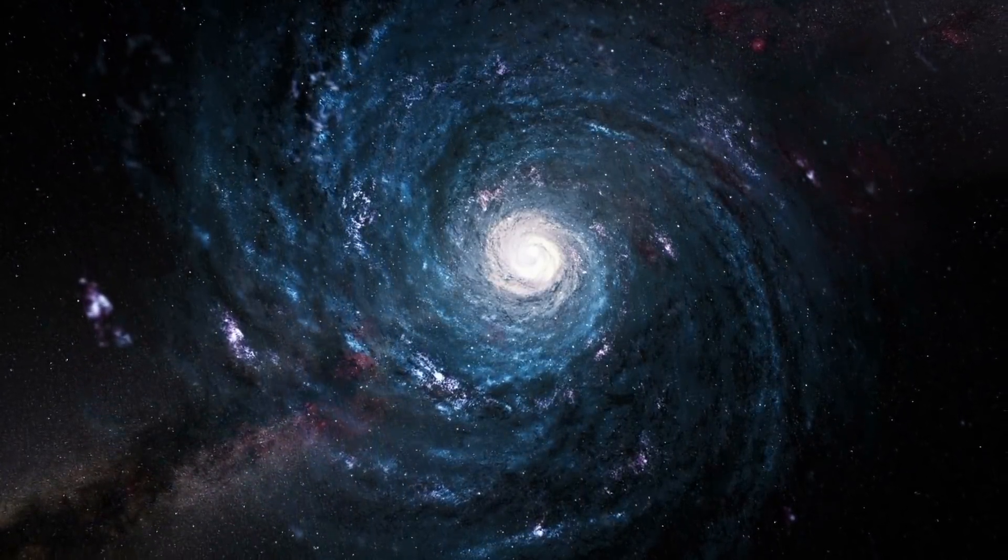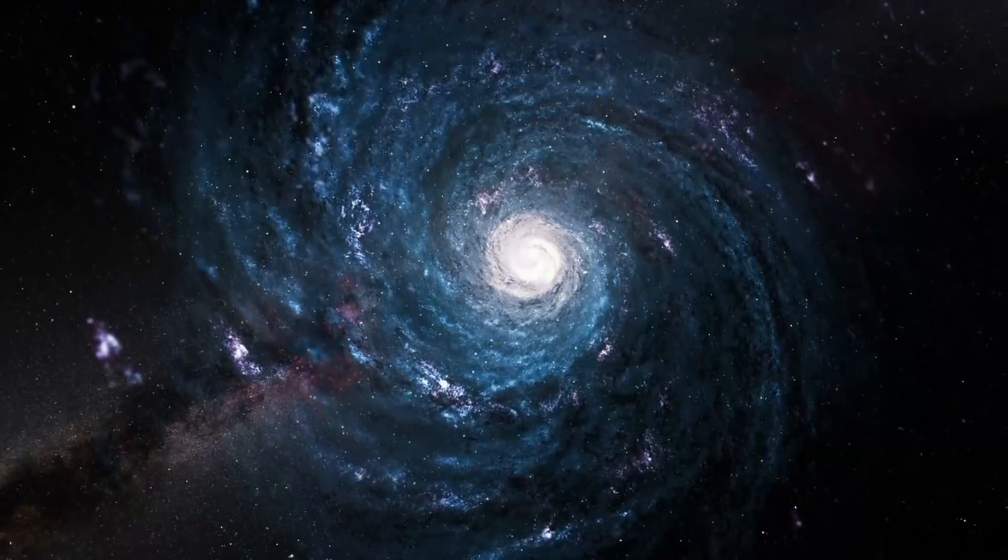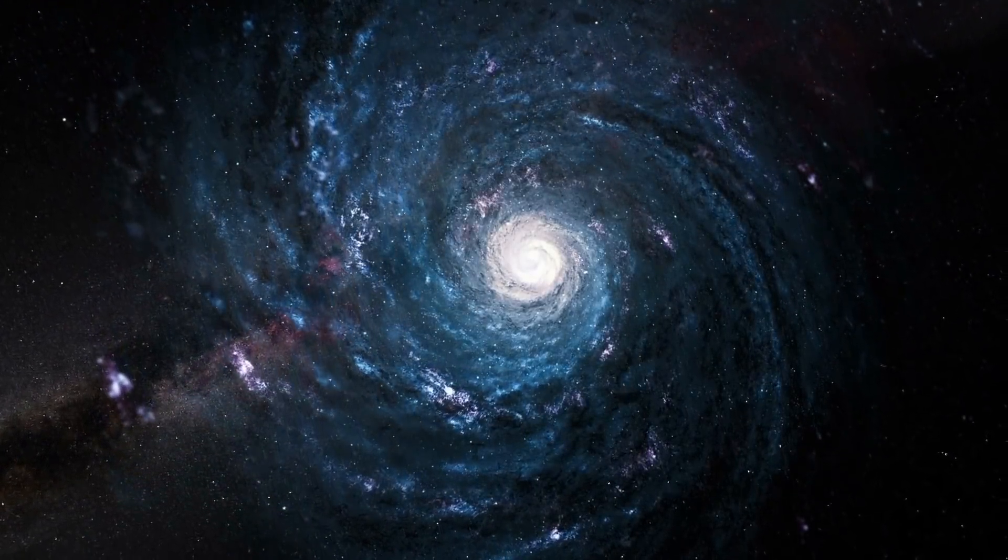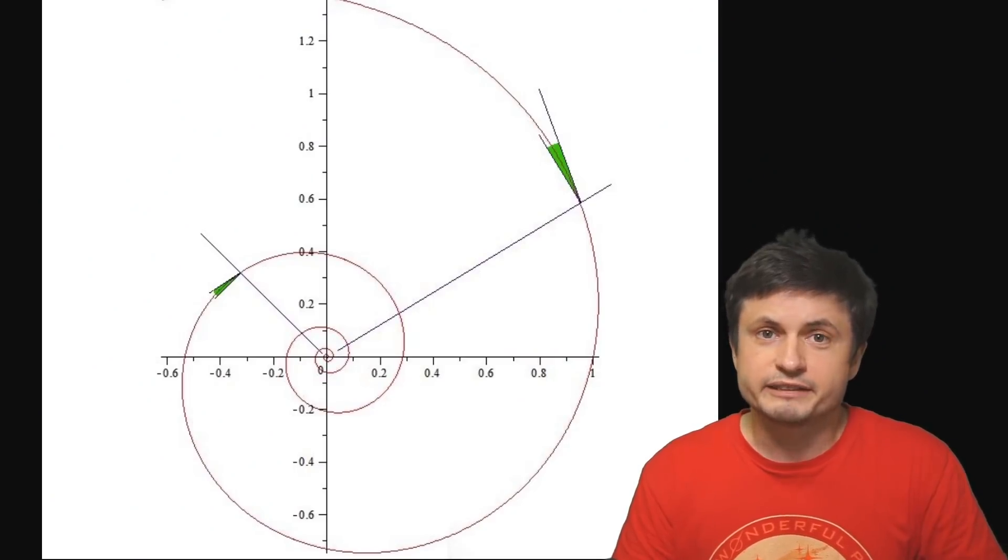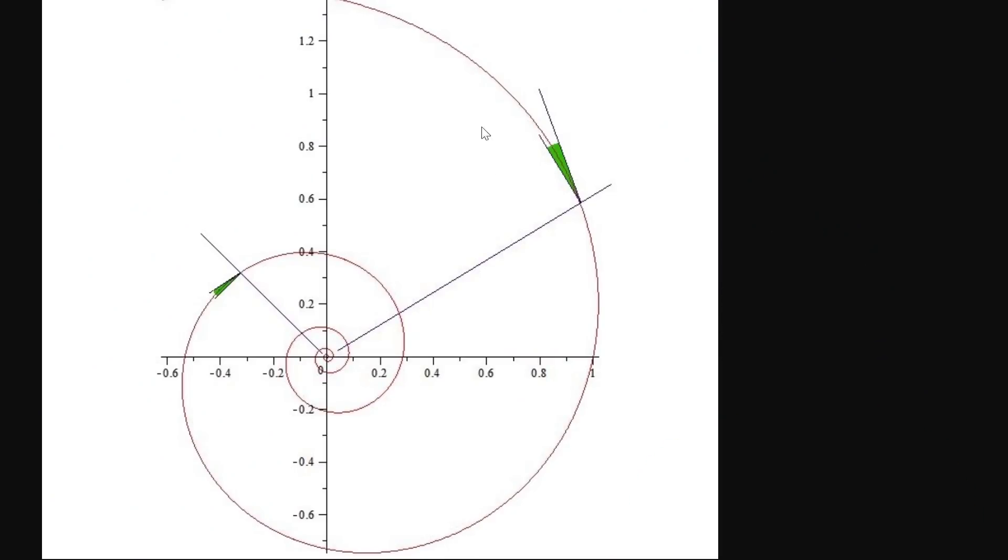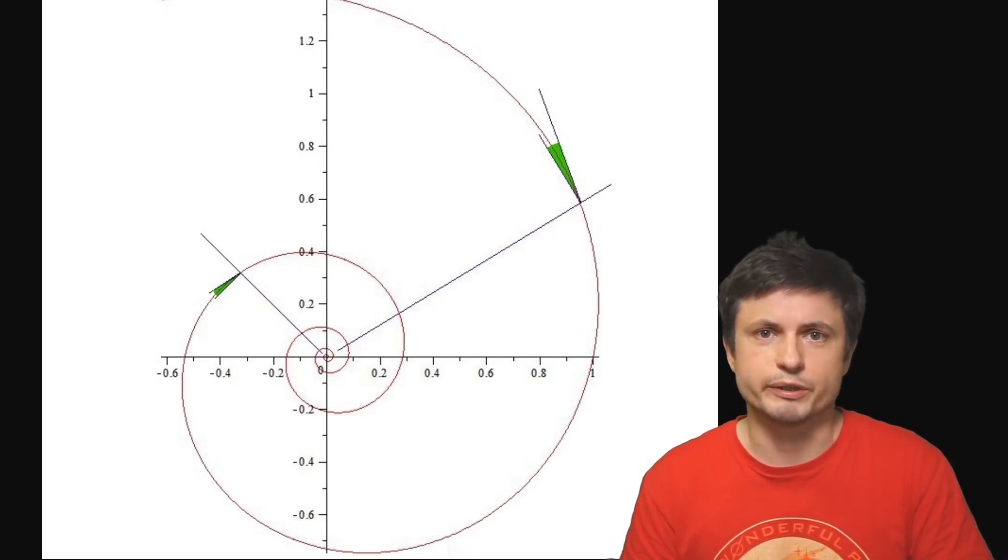So normally when you look at a typical galactic arm, the so-called angle of pitch is about 12 degrees. Mathematically speaking, it refers to the angle that can be visualized this way. So this angle right here in the galactic arm in our galaxy is believed to be approximately 12 degrees.